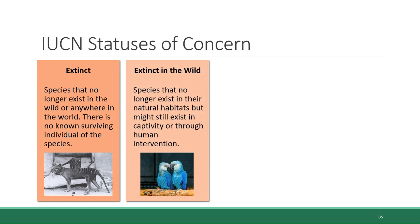One small step down from that category is extinct in the wild. These are species that no longer exist in their natural habitats but still exist in captivity or through human intervention. One example is Spix's macaw, a parrot that was native to Brazil and has been considered extinct in the wild since 2019, although there are still some birds cared for by conservation organizations and efforts are being made to reintroduce them.